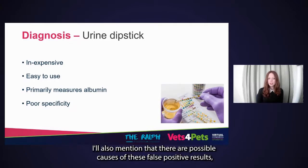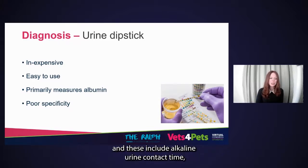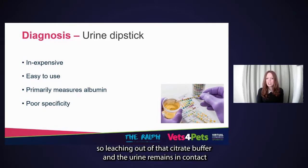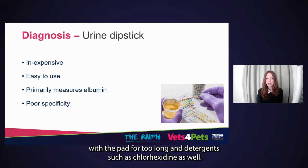There are also possible causes of false positive results, including alkaline urine, contact time — where leaching of the citrate buffer occurs if the urine remains in contact with the pad too long — and detergents such as chlorhexidine.